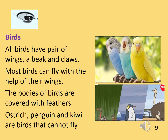The fourth type is birds. All birds have a pair of wings, a beak and claws. Most birds can fly with the help of their wings. The bodies of birds are covered with feathers. Ostrich, penguin and kiwi are birds that cannot fly because of their heavy weight. Here is a very interesting story: all birds build nests for their young ones, but there is a clever bird which looks for ready-made nests. It lays its eggs in a crow's nest and the mother crow takes care of the eggs thinking them to be its own. Do you know which bird this is? Yes, it's a coel — coel is really a clever bird.